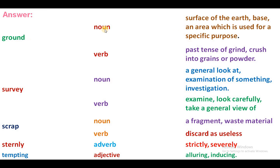Answer. Ground — as a noun: surface of the earth, base, and area which is used for a specific purpose. As a verb: past tense of grind, crush into grains or powder. Survey — noun: a general look or examination of something, investigation. As a verb: examine, look carefully, take a general view. Scrap — noun: a fragment or waste material.